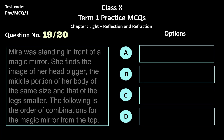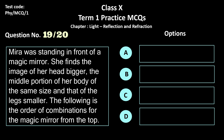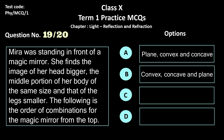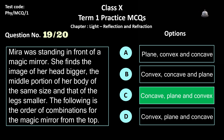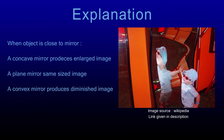Question 19. Meera was standing in front of a magic mirror. She finds the image of her head bigger, the middle portion of her body of the same size, and her legs smaller. The order of combination of the magic mirror from the top is — options: a) plane, convex and concave, b) convex, concave and plane, c) concave, plane and convex, and d) convex, plane and concave. When close to a magic mirror, a concave mirror forms an enlarged image, a plane mirror forms a same-size image, and a convex mirror forms a diminished image, giving the order: concave, plane and convex.